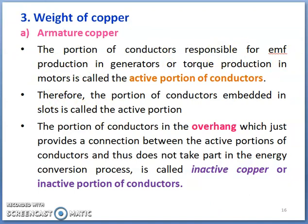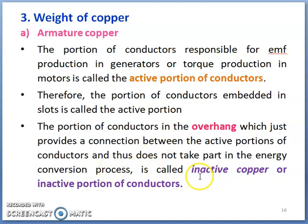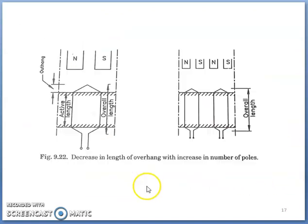The portion of conductors responsible for EMF production in generators or torque production in motors is called the active portion of conductor. This portion will be embedded in slots. The portion of conductor in the overhang, which just provides connection between active portions and does not take any part in the energy conversion process, is called the inactive portion of conductor. By seeing this figure, we will understand what is active copper and what is inactive copper.